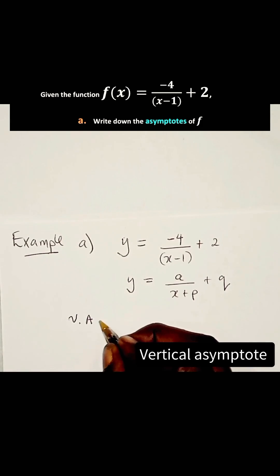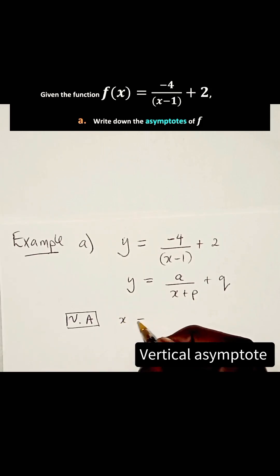And the vertical asymptote is given by X is equal to minus P. All right. And in this case, you realize that P is minus 1.